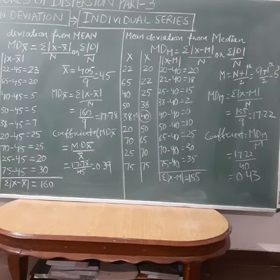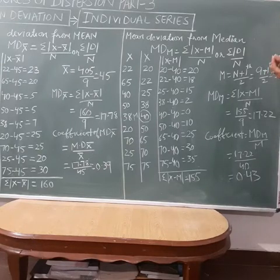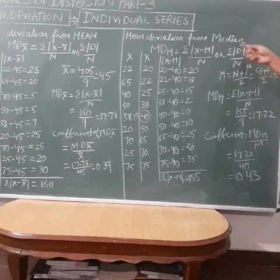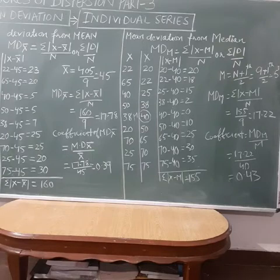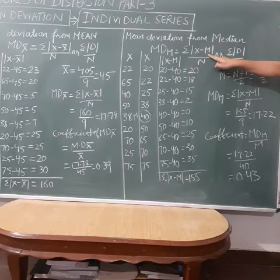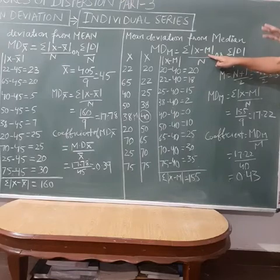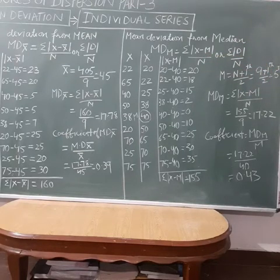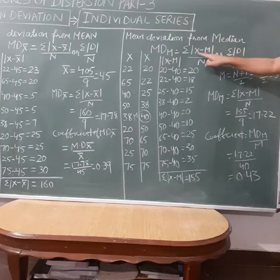There is a slight difference in the formula. In the earlier formula we used x minus x-bar. Now since I am finding mean deviation from median, I will write x minus median. Only this change is there; the rest of the formula is the same for individual series. Similarly, if we find mean deviation from mode, only this part changes to x minus z.